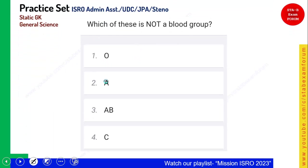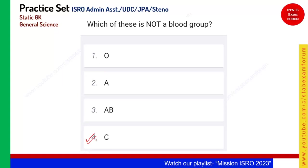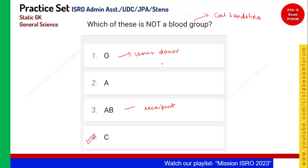Let's see the next question — a very simple one. Which of the following is not a blood group? Blood group C is not a blood group. Whenever you see a blood group related question, remember: blood group was discovered by a scientist called Karl Landsteiner. The universal donor is blood group O, and the universal recipient is AB. These are some additional facts you should have.